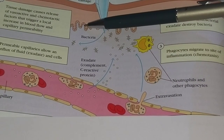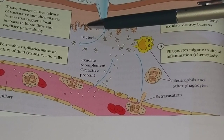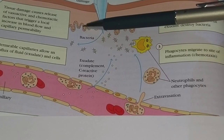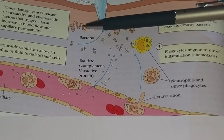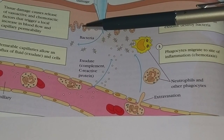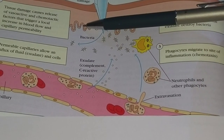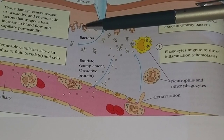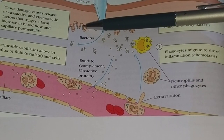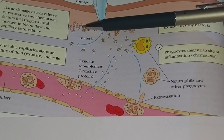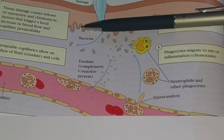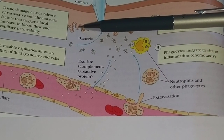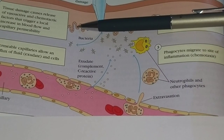Leukocytes phagocytose the invading pathogens and release molecular mediators such as cytokines. These molecular mediators play a role in the inflammatory response and in the activation of effector cells.